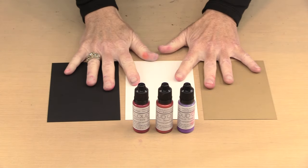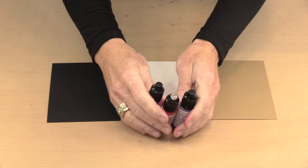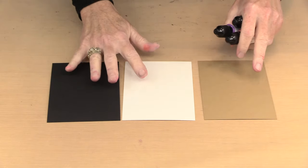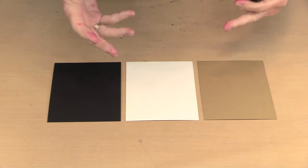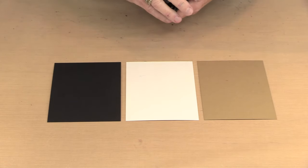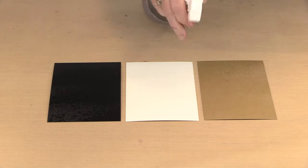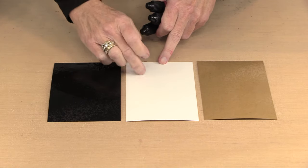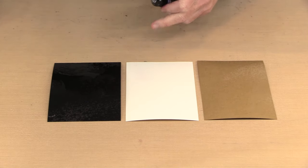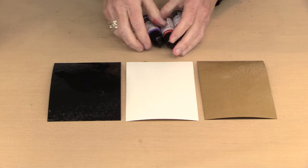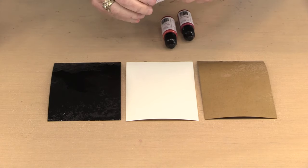I have my surfaces ready to go - again a craft, a watercolor and a black. And I have three colors: Cherry Bomb, Golden Sun and Lavender Fields. What I'm going to do is add some drops of each of these to my wet surfaces. How much water I put on here is going to affect how much the color moves. If I think I need more, I can either put it on now or I can put it on afterward.